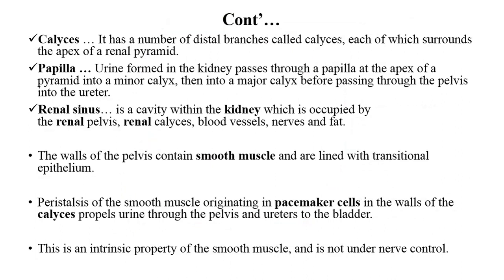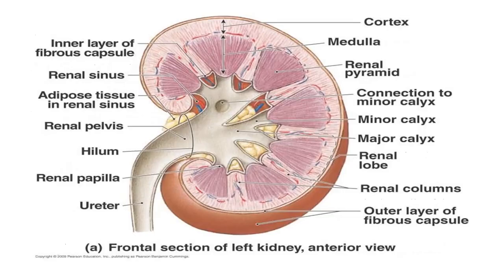Renal sinuses: the renal sinuses are cavities within the kidney occupied by the renal pelvis. The renal pelvis comprises small cavities called renal calyces, and blood vessels enter into the renal sinuses. The outermost covering of the kidney is the fibrous capsule; from the capsule there is the renal cortex, and from the renal cortex there is the renal medulla. Within the renal medulla there are triangle or pyramid-shaped structures known as the renal pyramids.